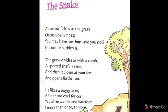He likes a boggy acre, a floor too cool for corn, yet when a child and barefoot, more than once at morn. This means that a boggy place is somewhere a little wet and marshy where you might walk barefoot as a child.